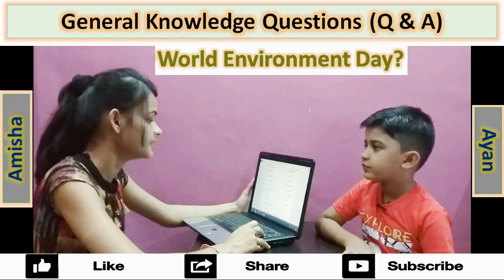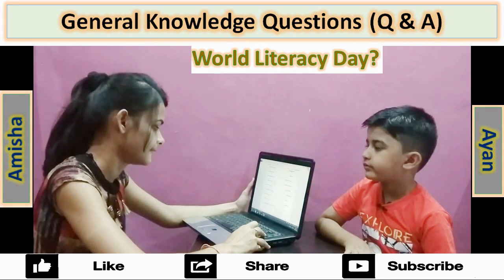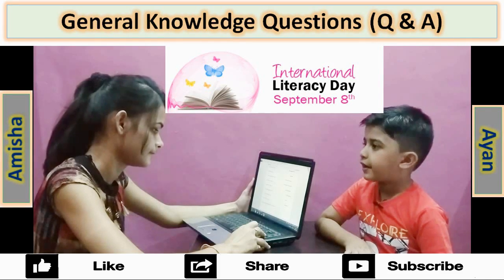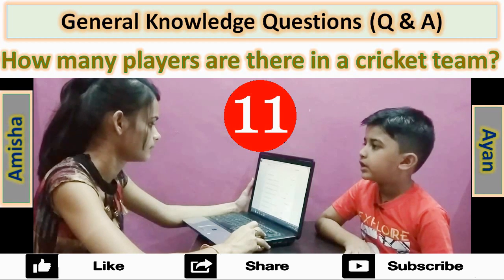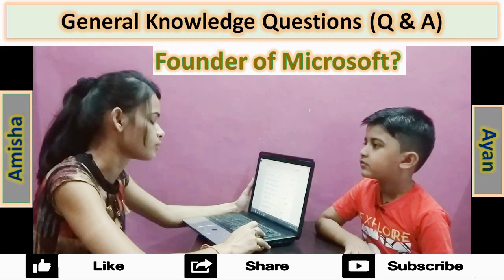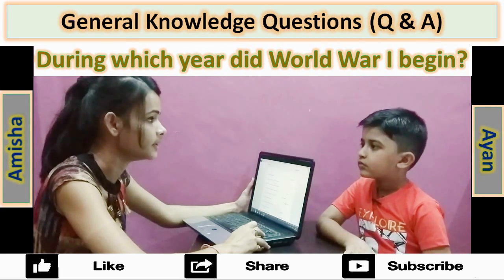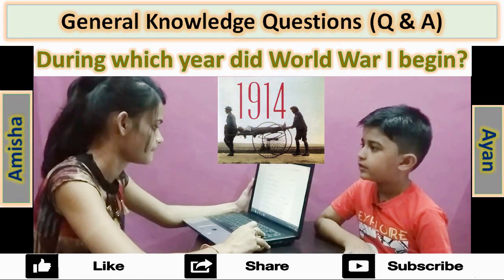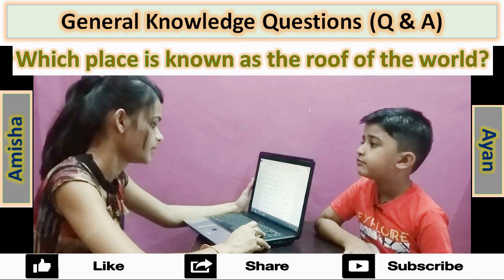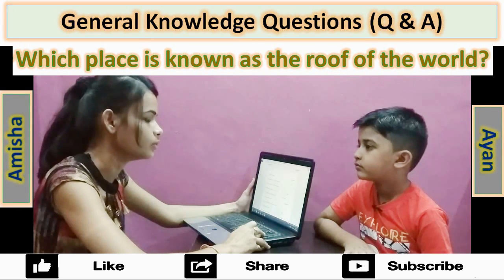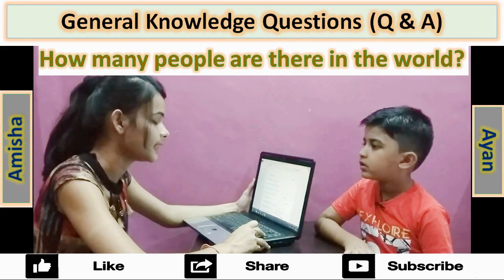Largest plateau in the world? Tibetan Plateau. World Environment Day? 5th June. World Literacy Day? 8th September. How many players are there in a cricket team? 11. Founder of Microsoft? Bill Gates. During which year did World War 1 begin? 1914. How many cricket World Cups does India have? 2. Which place is known as the roof of the world? Tibet. How many people are there in the world? 7 billion.